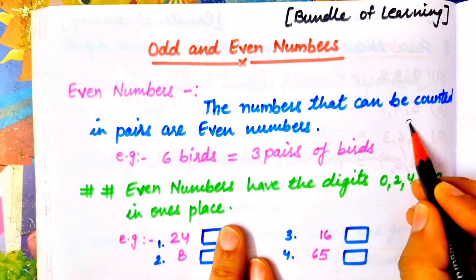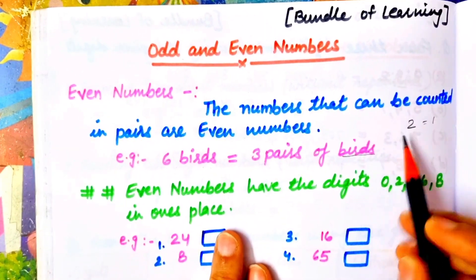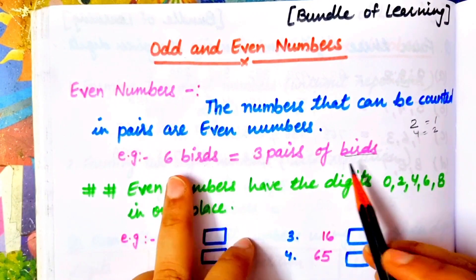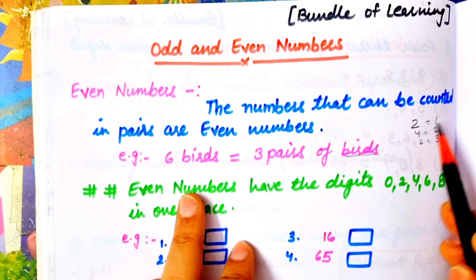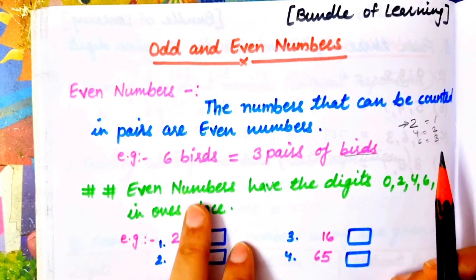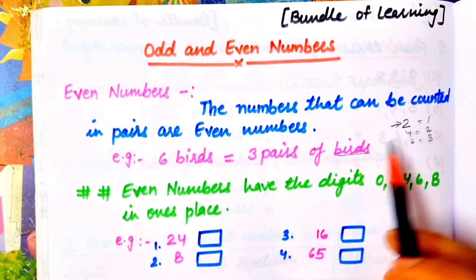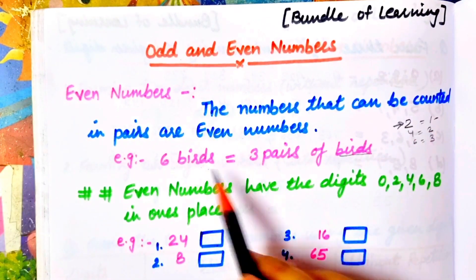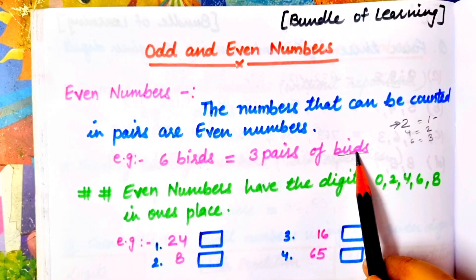A pair means two. So two birds is one pair, four birds is two pairs, and six birds is three pairs. If a number cannot be arranged in complete pairs, then it is not an even number.